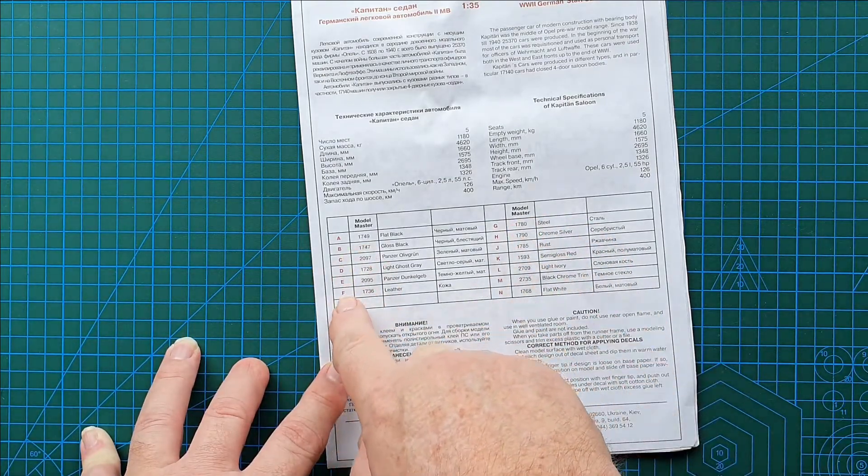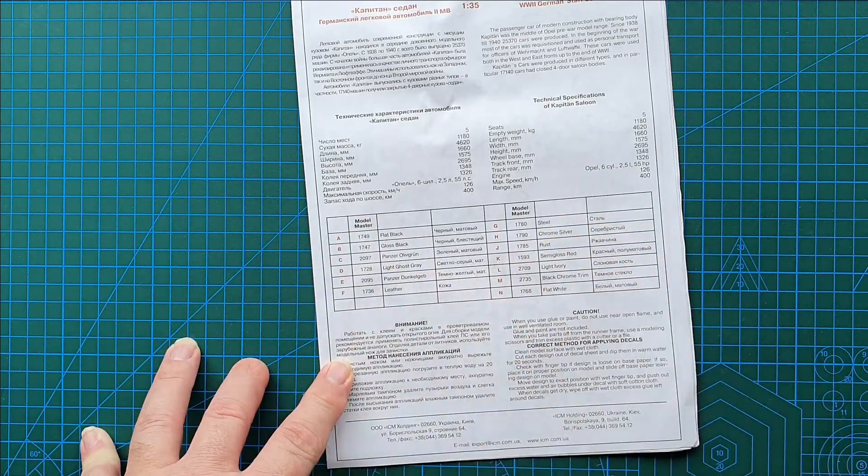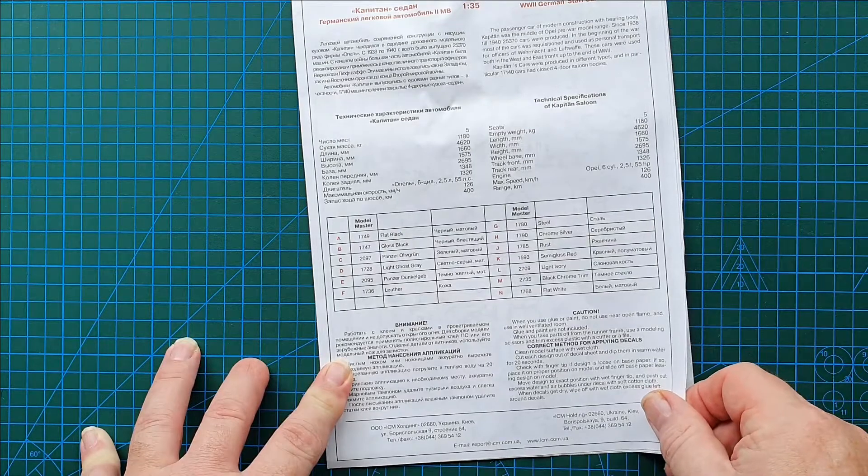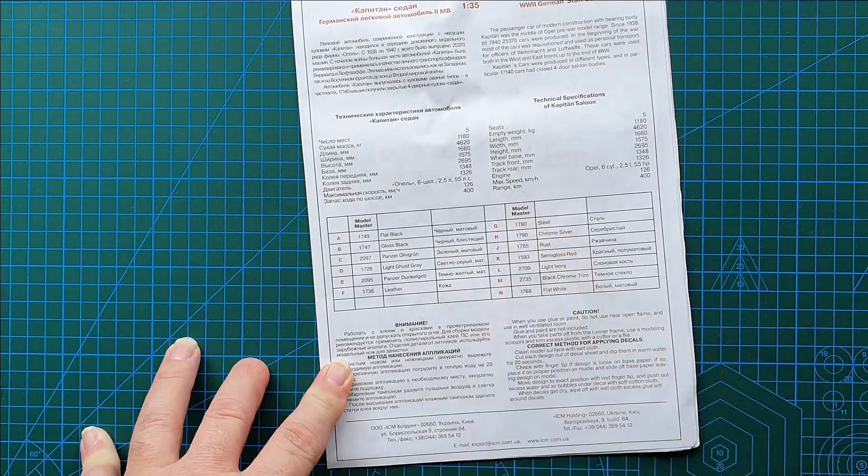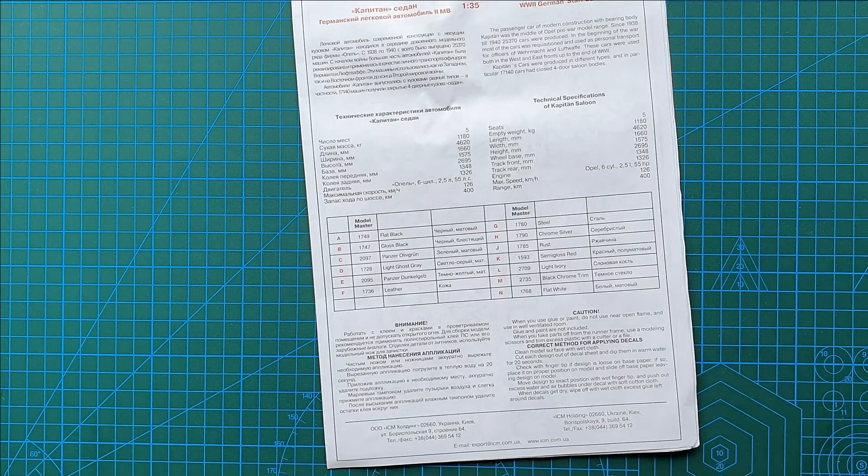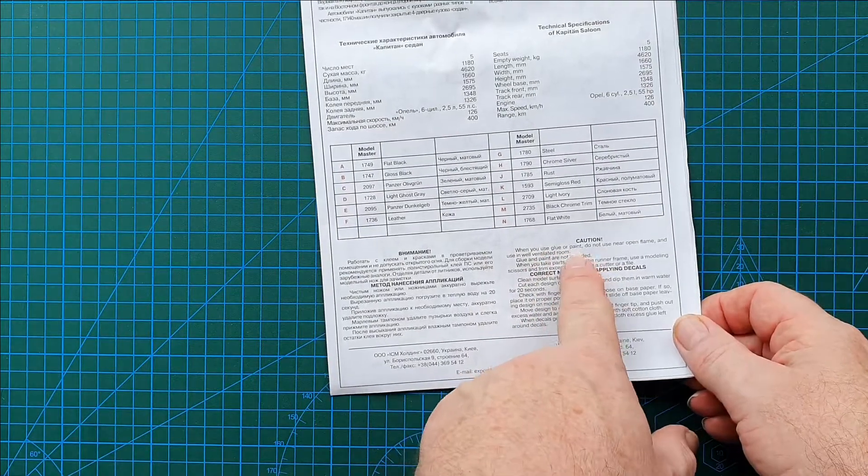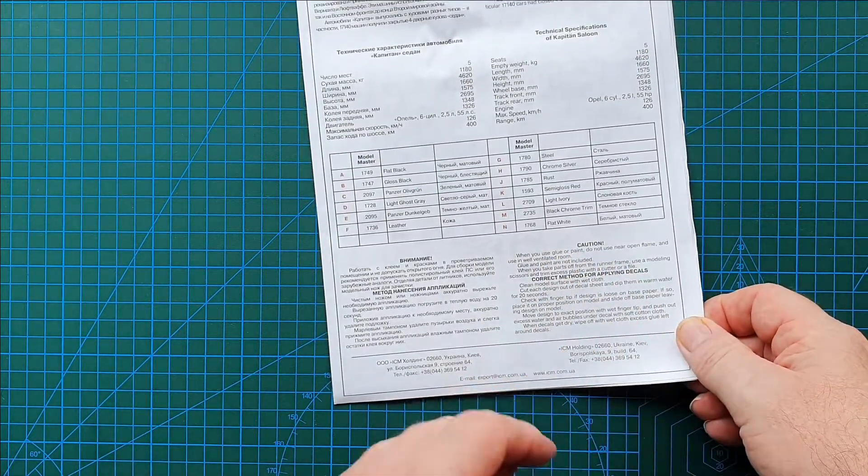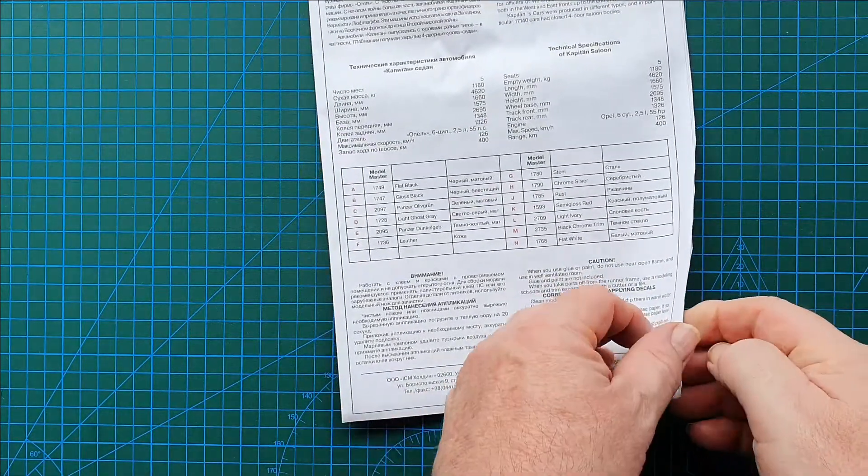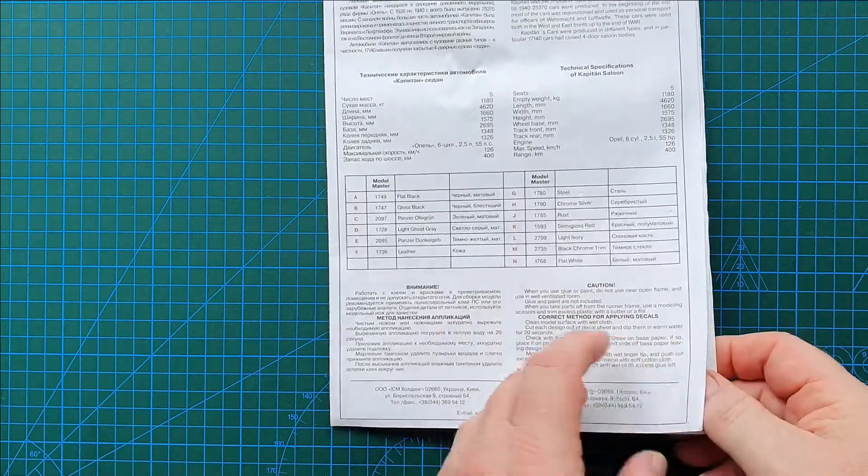You have six, ten, thirteen color suggestions right here. All Model Master, so you'll have to look up your own manufacturer's particular color range. Cautions: when you use glue and paint, don't put it near open flame. Don't blow yourself up and don't cut your fingers off.